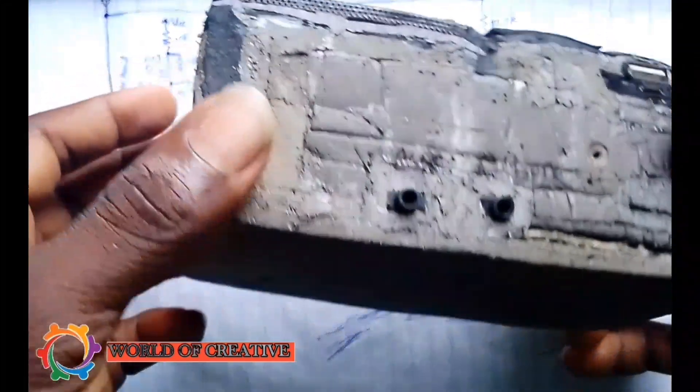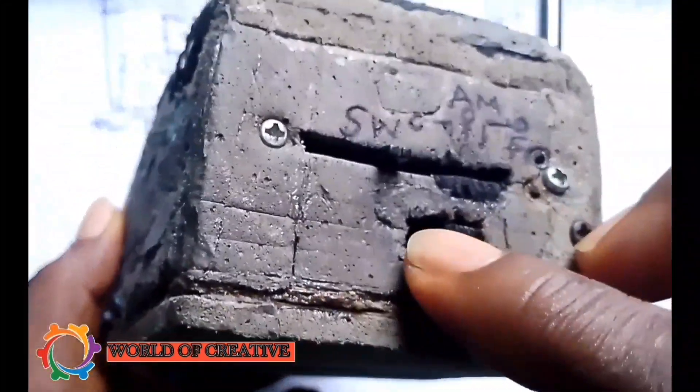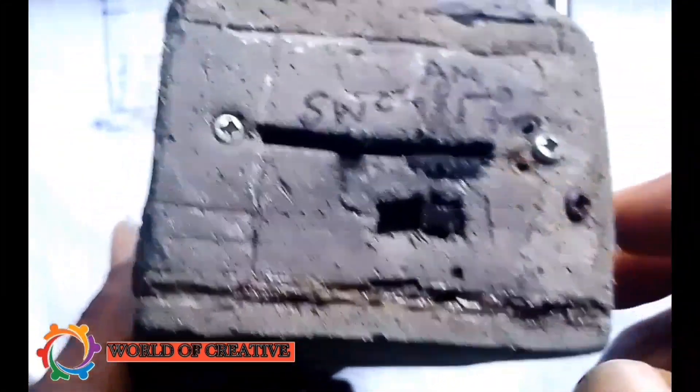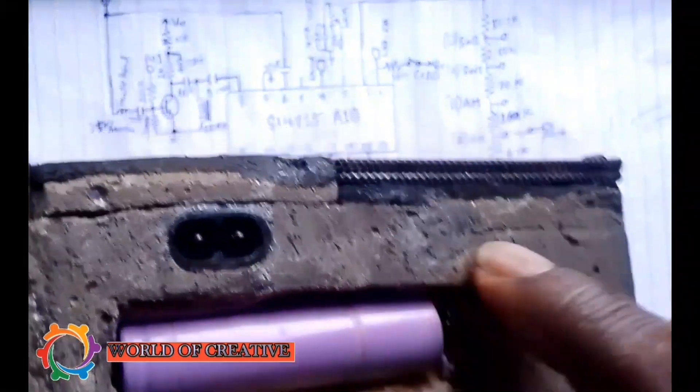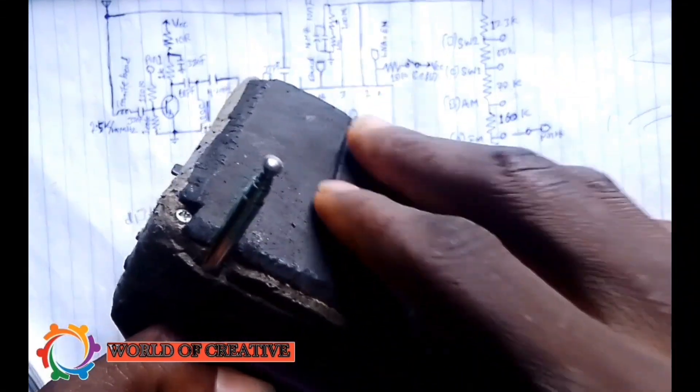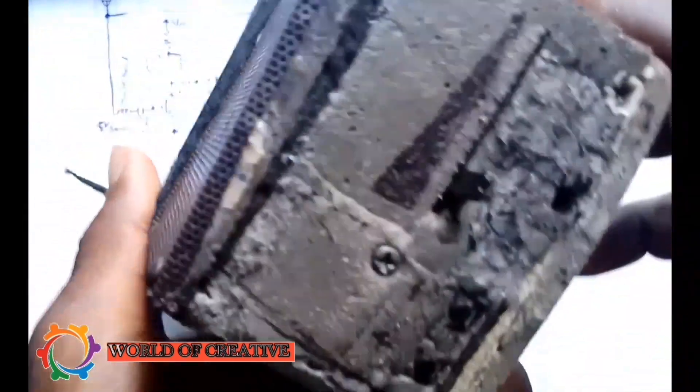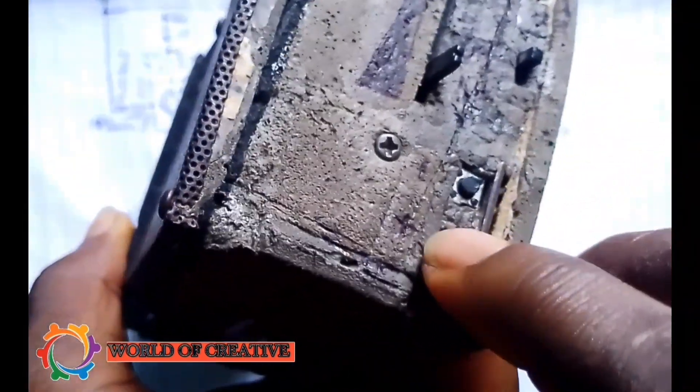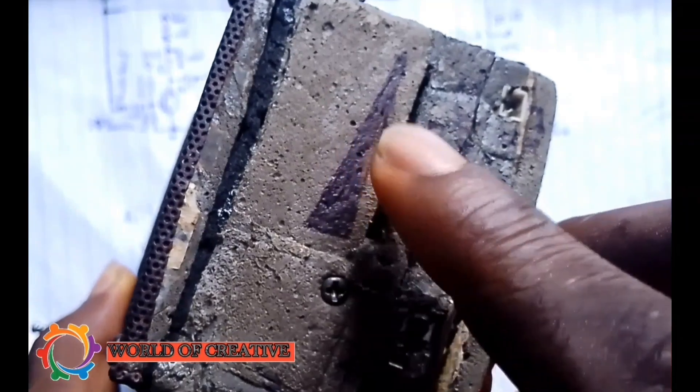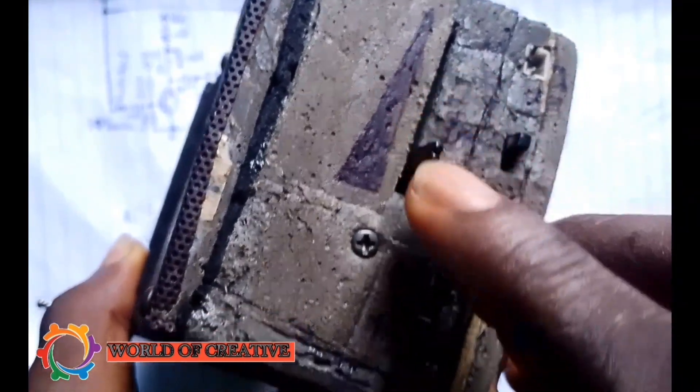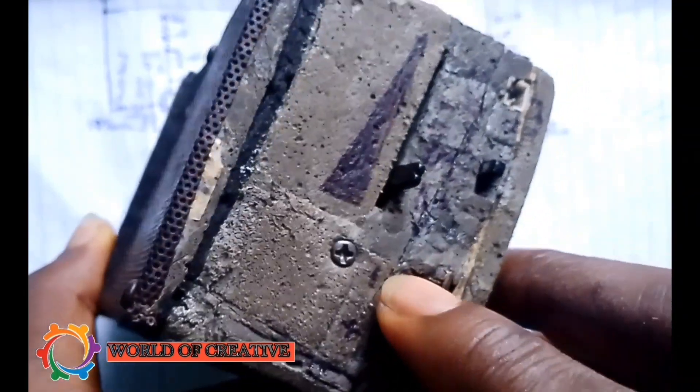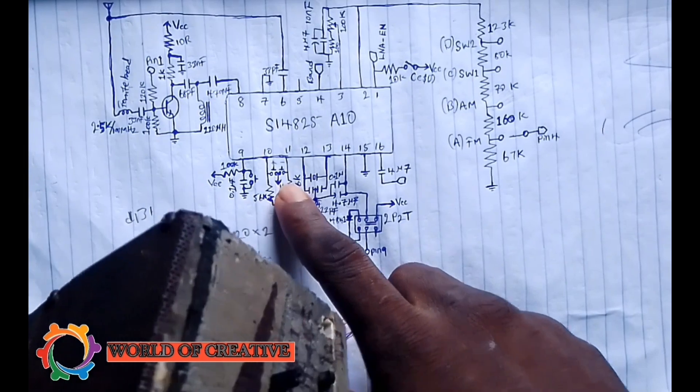Hey guys, this is the radio that I made. This is where I select the frequency. This is where I select the band. This is the battery. This is the power supply connection, and this is the speaker.